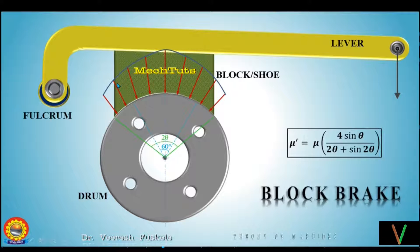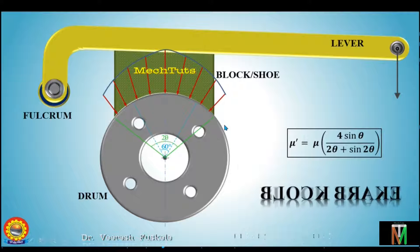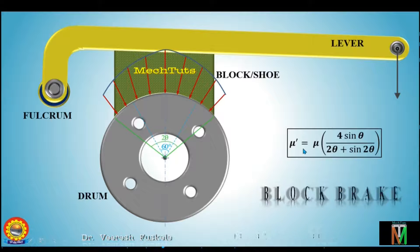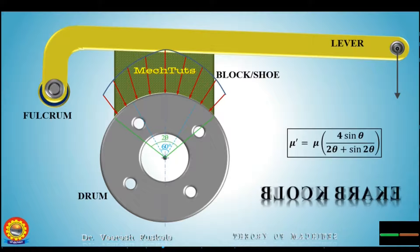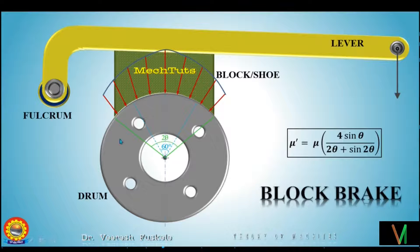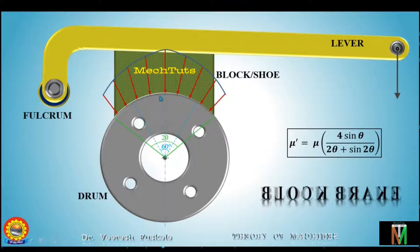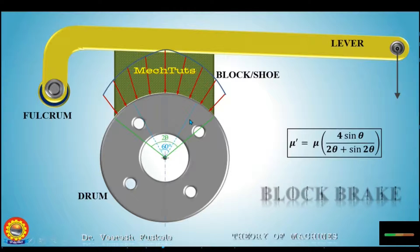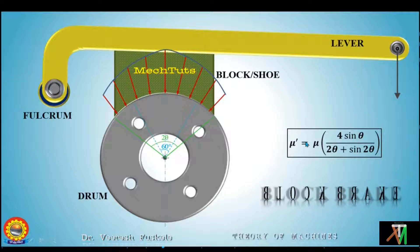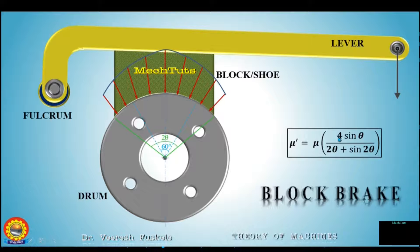So the variation of pressure will result in a varied friction coefficient. The concept is that the equivalent concentrated force acting on the drum should apply the same frictional torque. For that, the equivalent friction coefficient is given by: mu-dash equals mu times 4 sin-theta divided by (2-theta plus sin 2-theta).